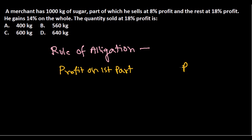...then we write profit on the second part. So profit on the first part is 8%, and profit on the second part is 18%. Remember, 8 and 18—simply put the percentage values there. And in between...